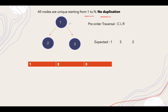Let's take a simple example from the question. We have one as a root node, two as its left child, and three as its right child. The pre-order traversal visits the current node, then left child, then right child — CLR. The expected pre-order traversal is one, three, two. The current pre-order traversal of this tree gives one, two, three — visiting the root first, then left, then right.